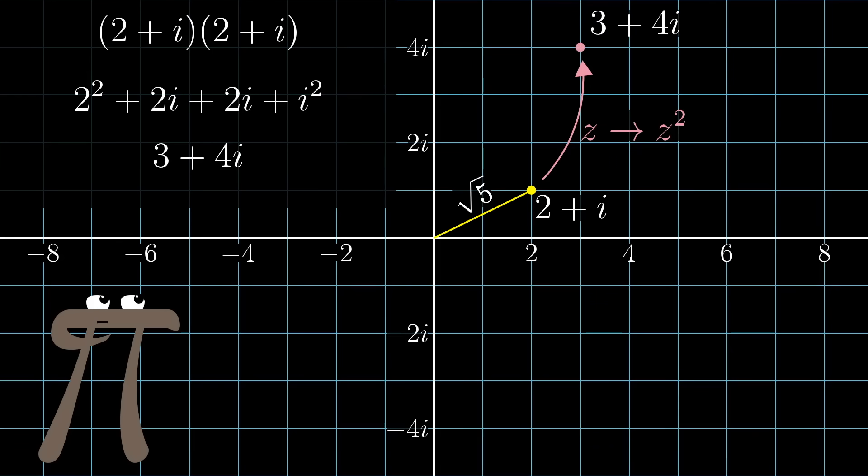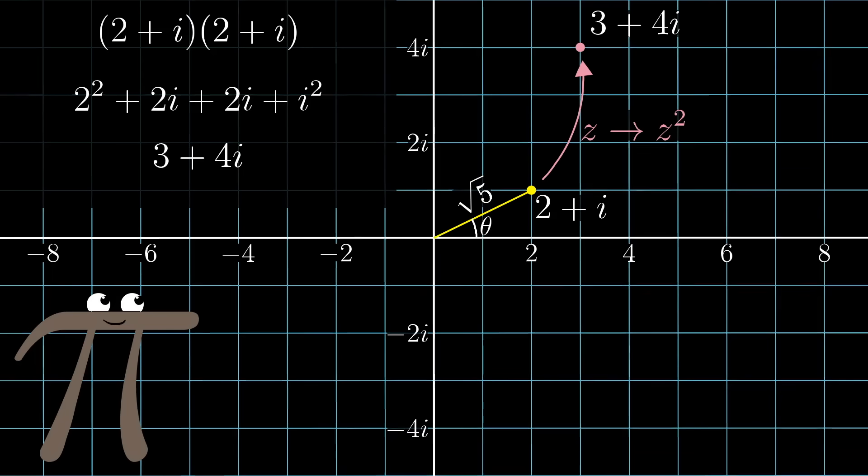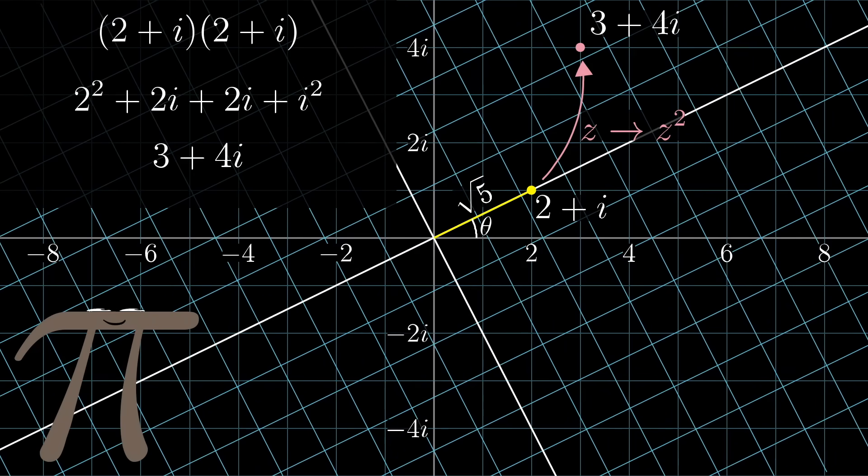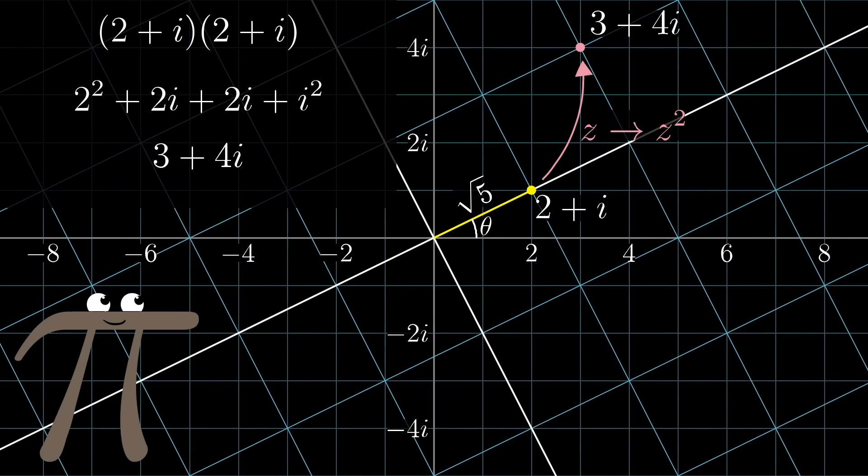But you can also think of complex multiplication more geometrically. You take this line drawn from the origin to the number, and consider the angle it makes with the horizontal axis, as well as its length, which in this case is the square root of 5. The effect of multiplying anything by this complex number is to rotate it by that angle, and to stretch out by a factor equal to that length.